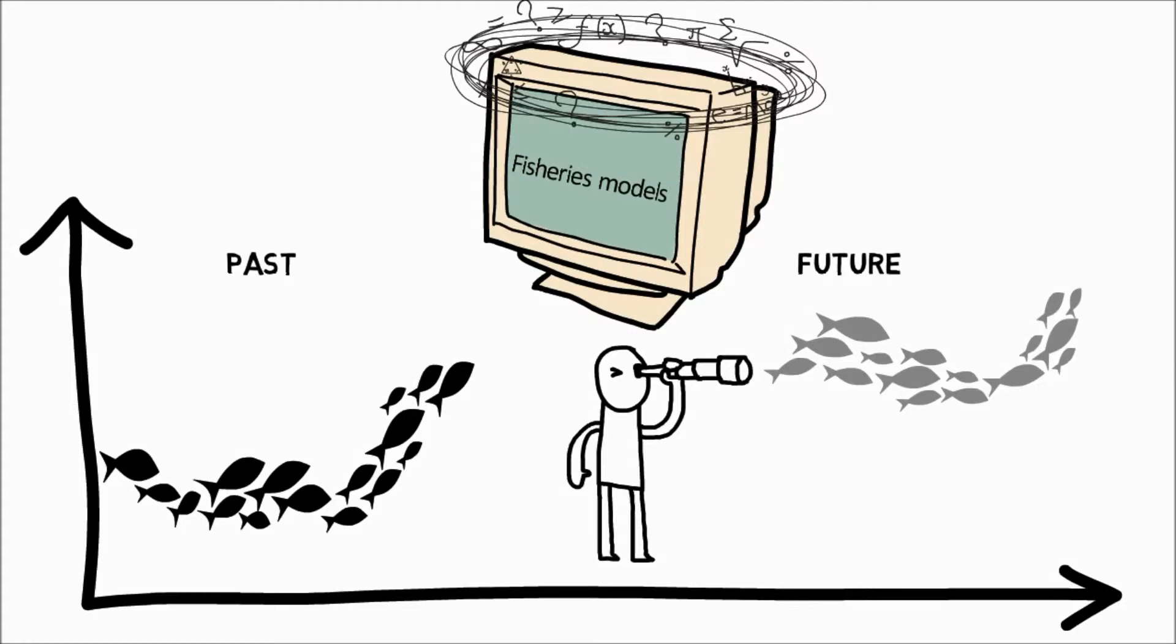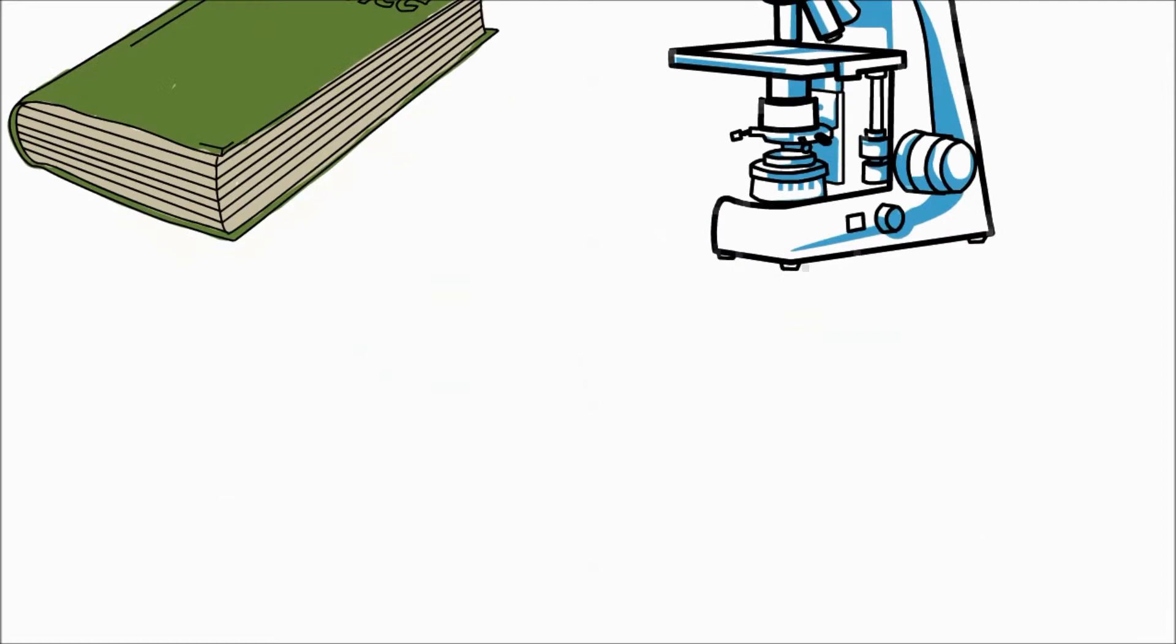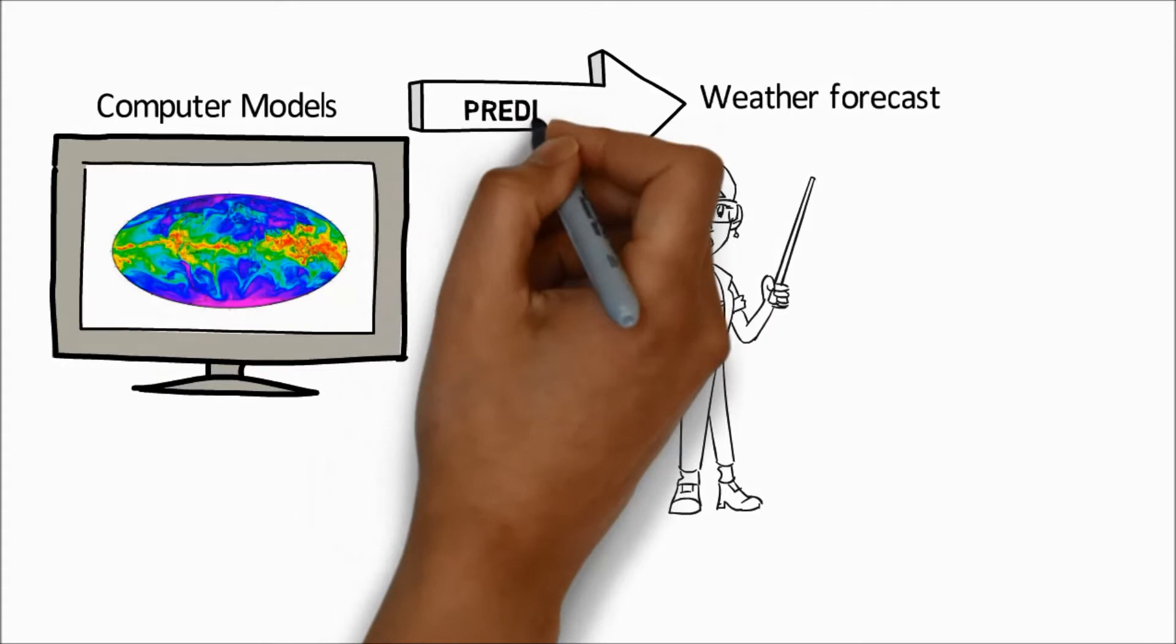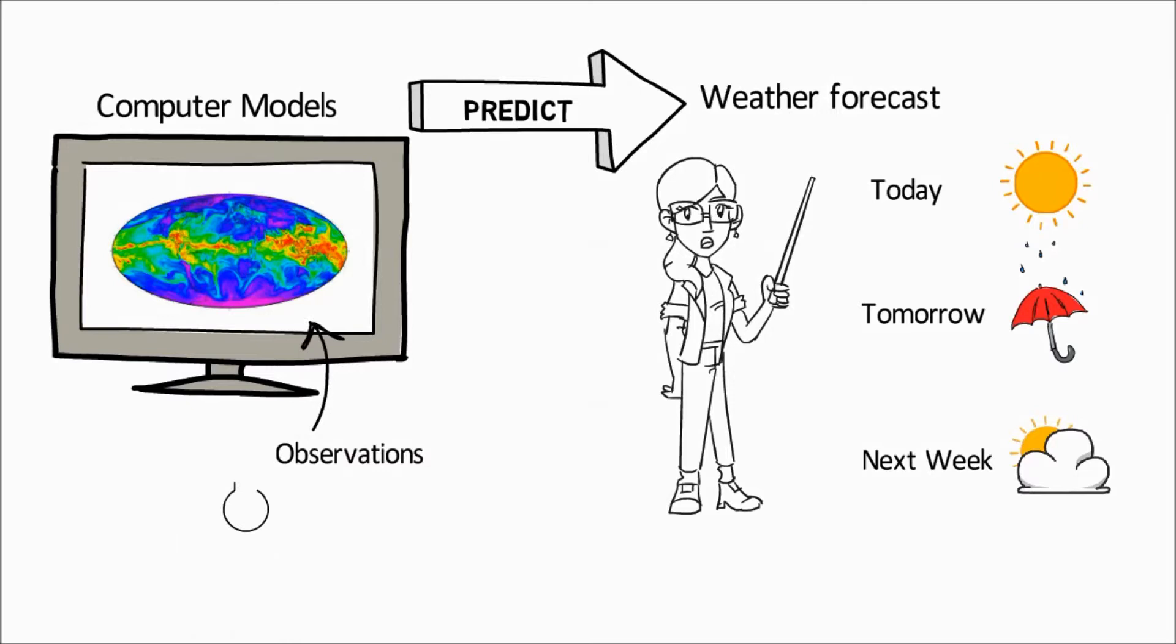Models pull together theory and observations. For example, weather forecasters use computer models to predict if it will be sunny or rainy tomorrow or next week using their knowledge of the physics of the air, coupled with a variety of weather observations such as temperature and humidity.